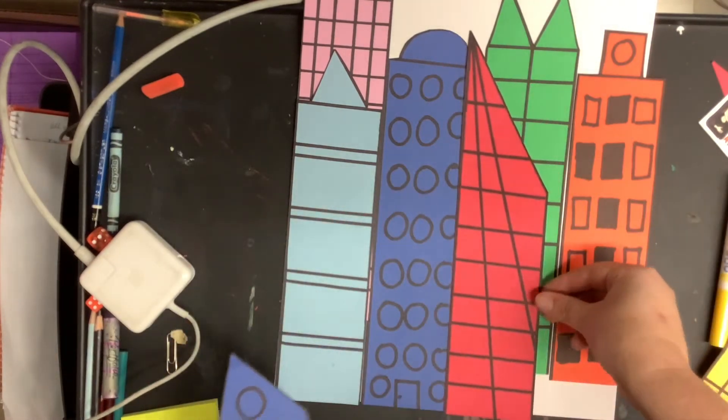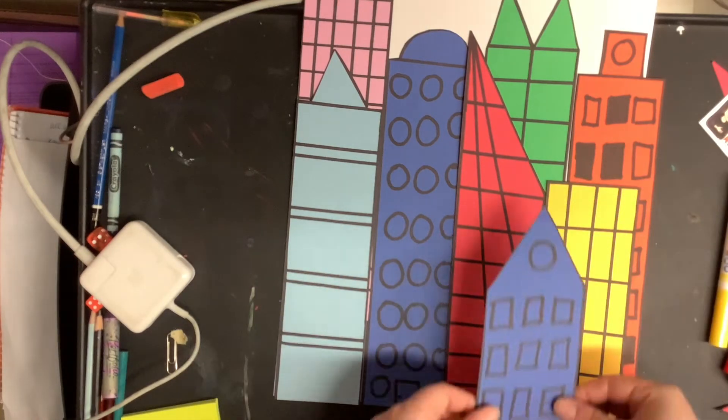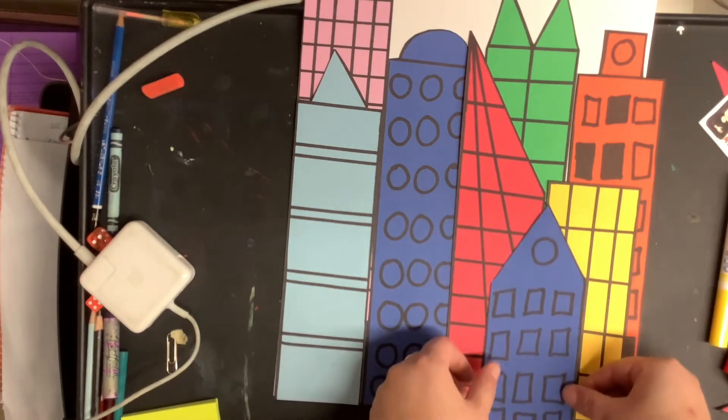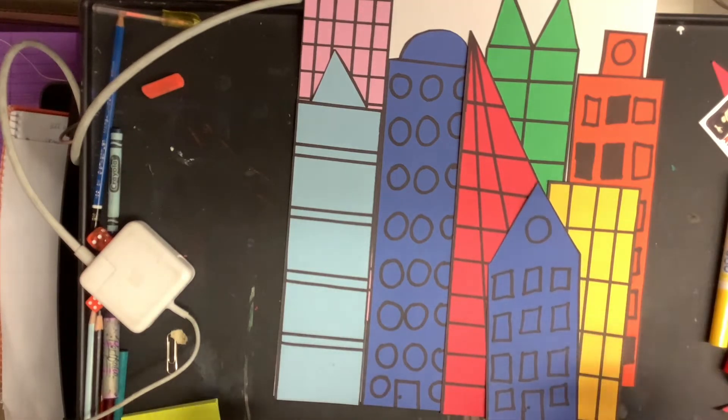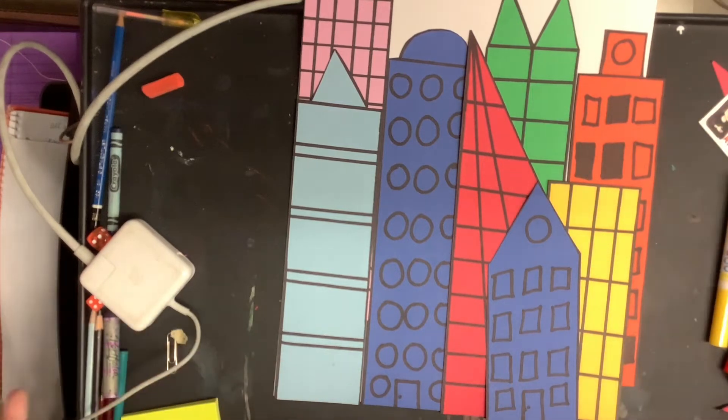And again you want to make sure that your buildings are going from tallest to shortest. Alright so here I did that. And so the front ones are lined up with the bottom but the top ones aren't but you can't tell because of the way that I glued it down.